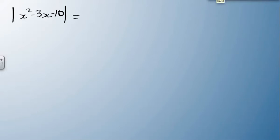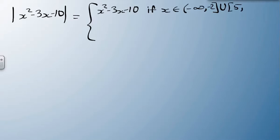So now I want to write out our piecewise function. We've got our normal part, which is x squared minus 3x minus 10. Now it is normal if x is an element of, and we're going from negative infinity up to negative 2, and from 5 to infinity.